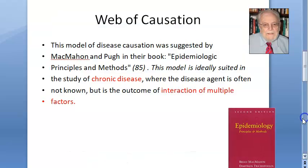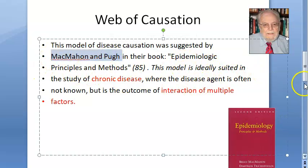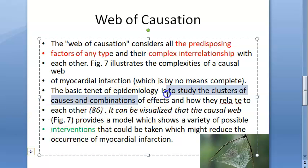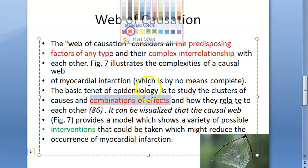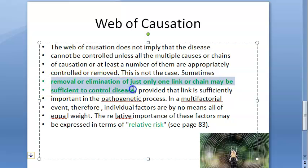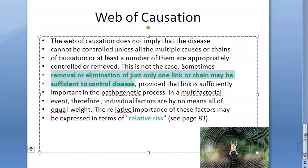So that's the web of causation — the example of myocardial infarction was given by McMahon and Pugh in their book 'Epidemiological Principles and Methods.' You can identify predisposing factors, their interactions, combinations of effects, decide the intervention, and check the relative risk of each factor to identify the highest risk. Even removing one link can help control the disease.